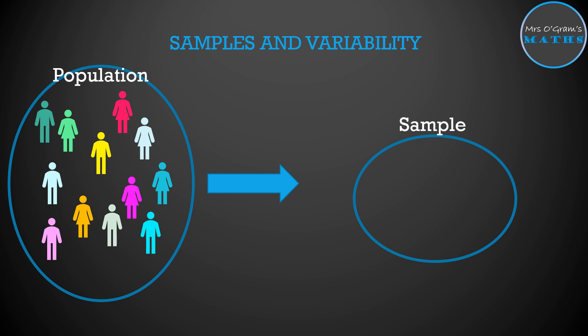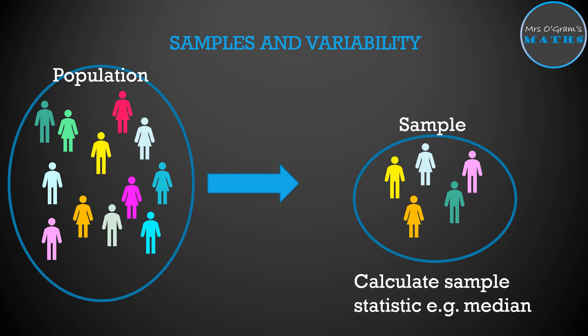It might be something like the amount of sugar that is consumed by people within this population and we want to do a health study. From that sample we grab a sample of people from there and then on that sample we would calculate the sample statistic, so it could be the median amount of sugar consumed in a day by these people.